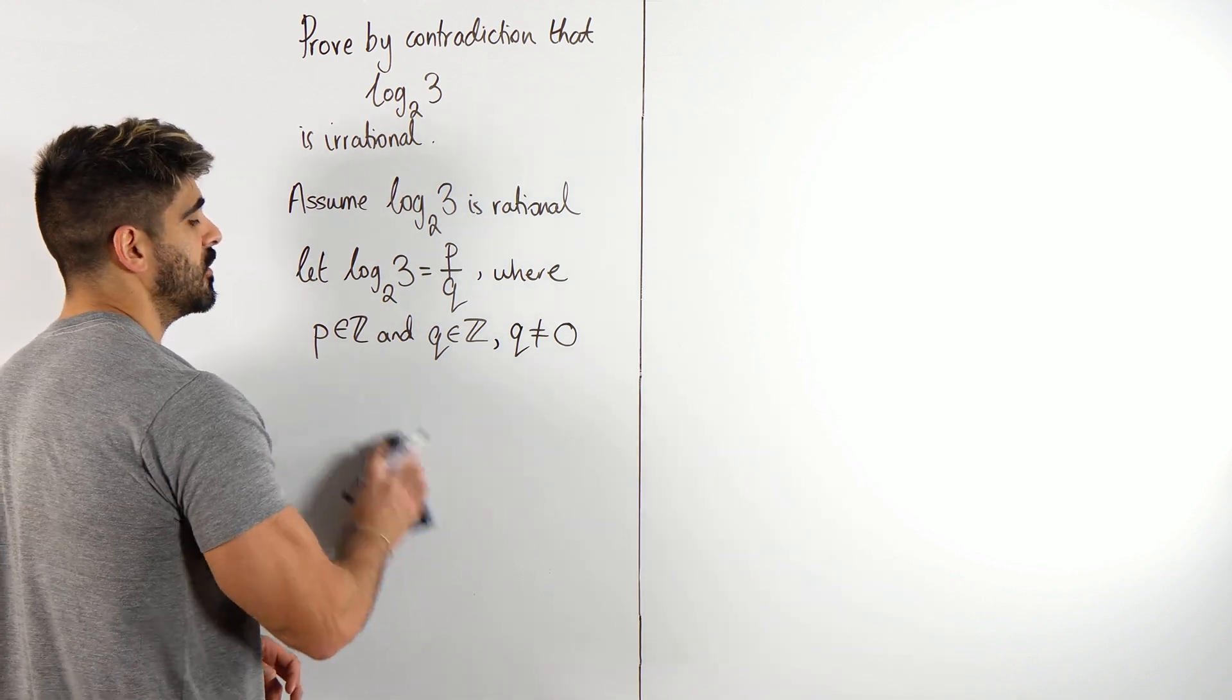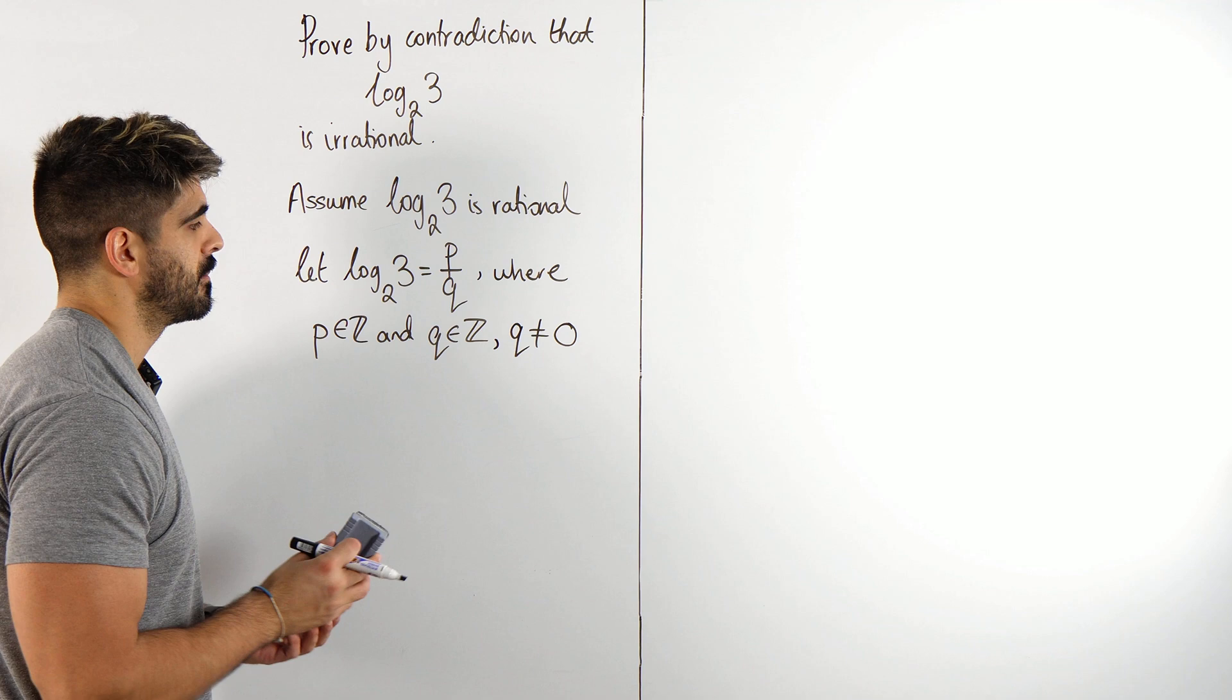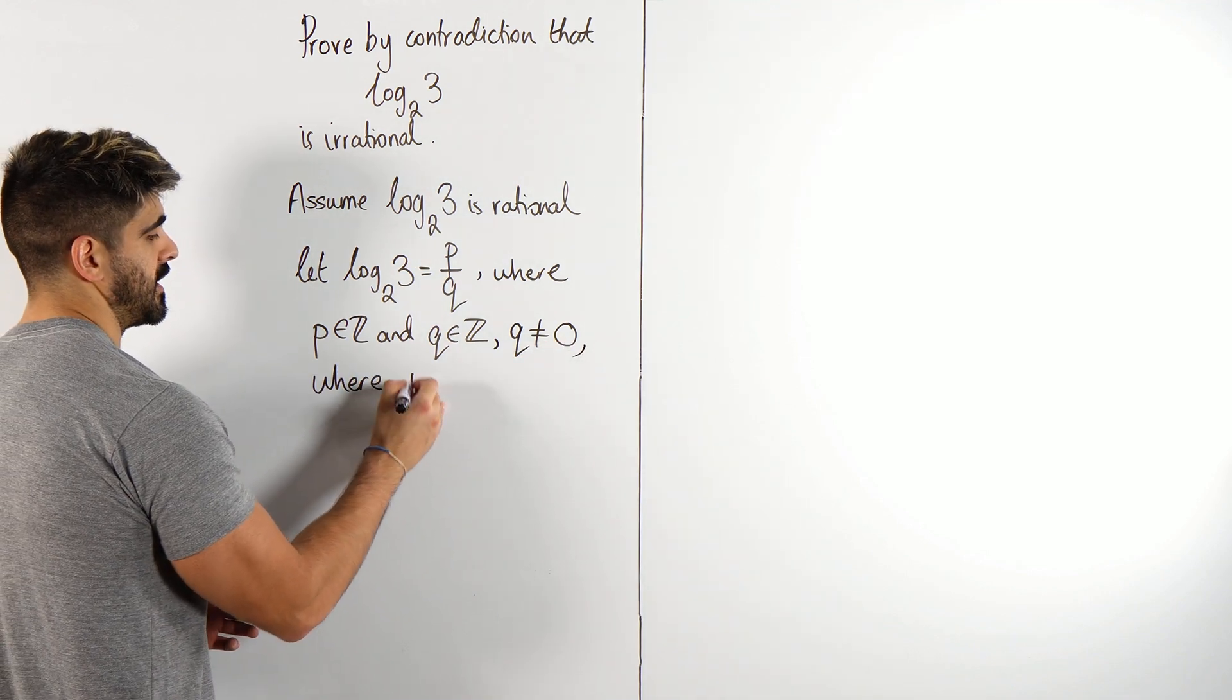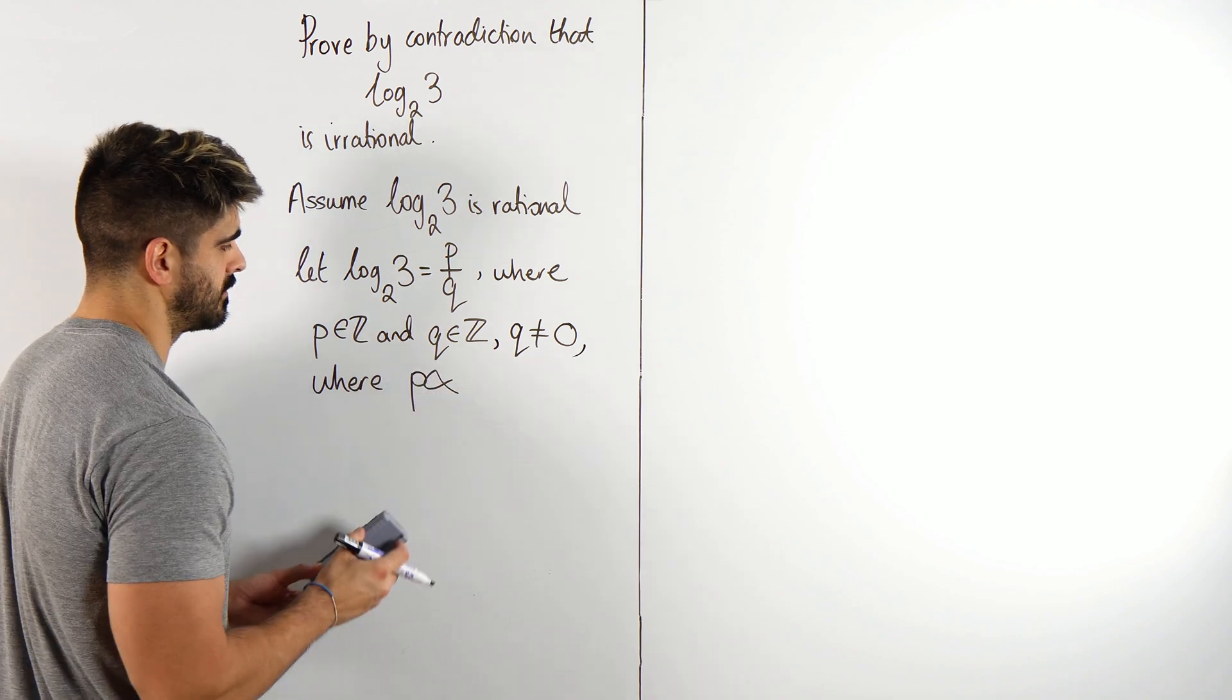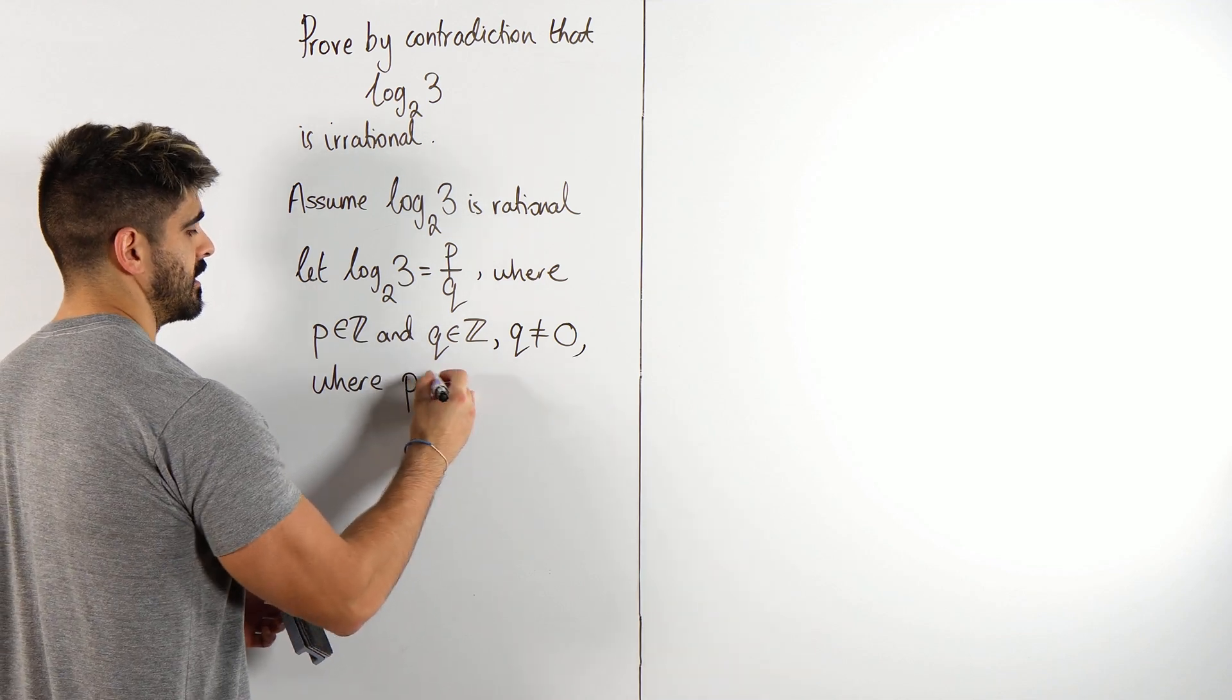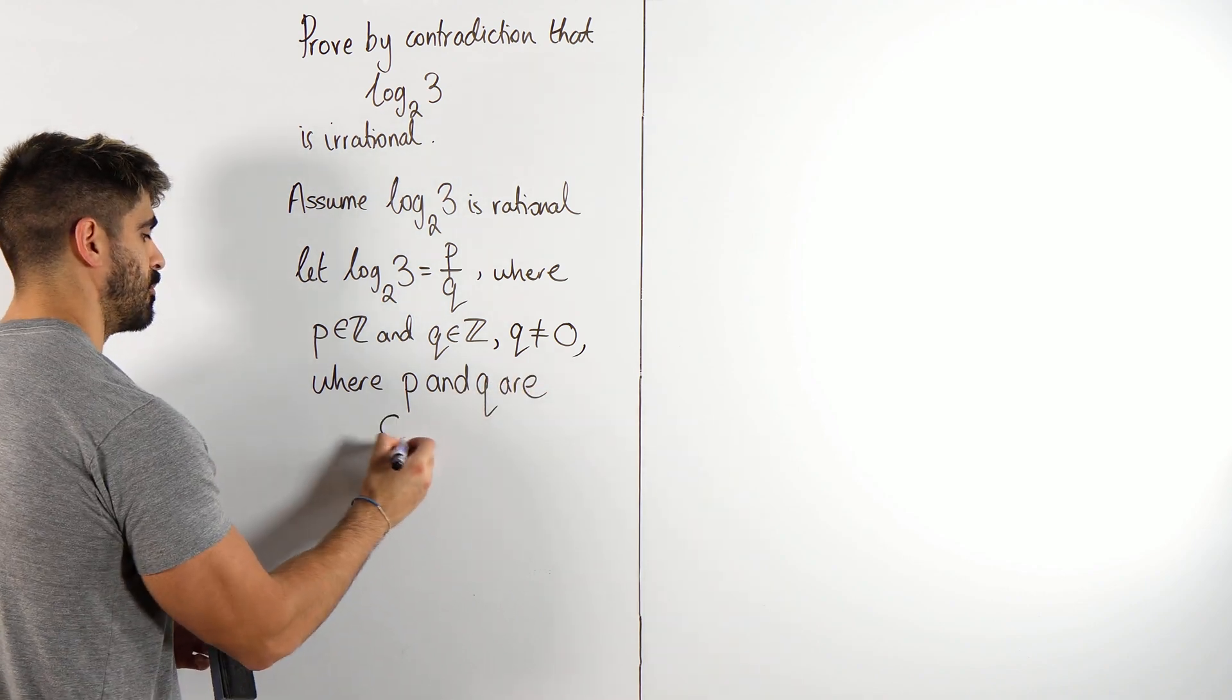So in university level maths we might say the GCD is 1, but I like to say where p and q, where p and what? That's a proportionality symbol. P and q are, this is a beautiful word, co-prime.